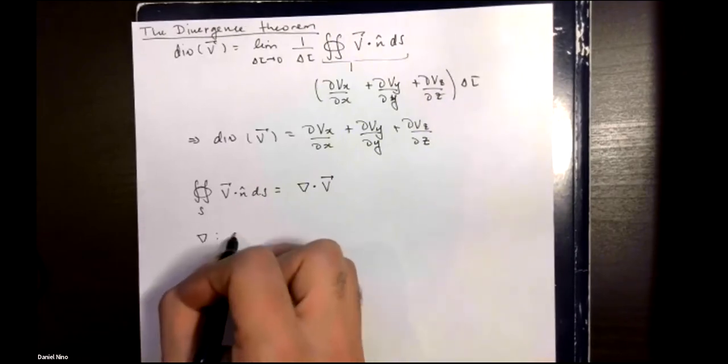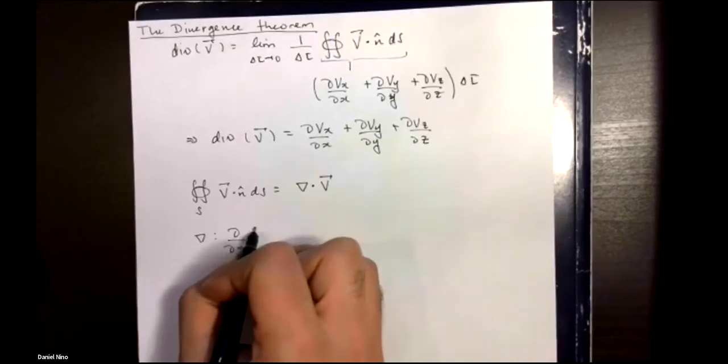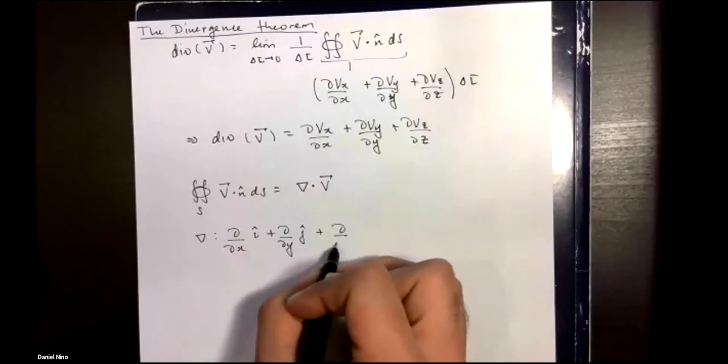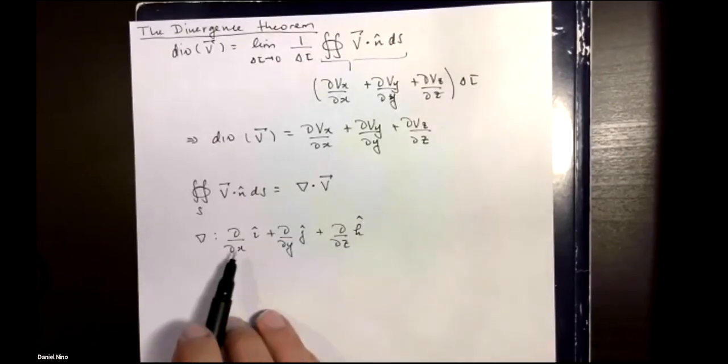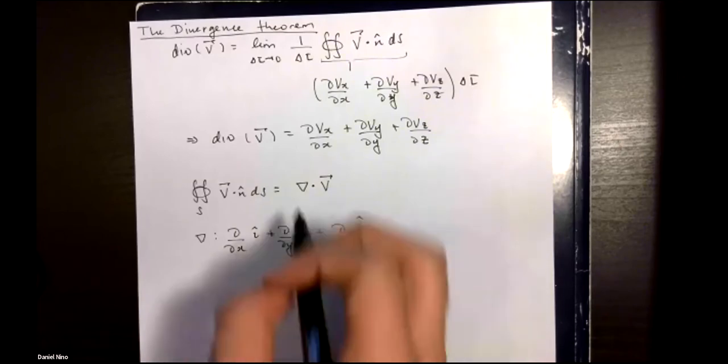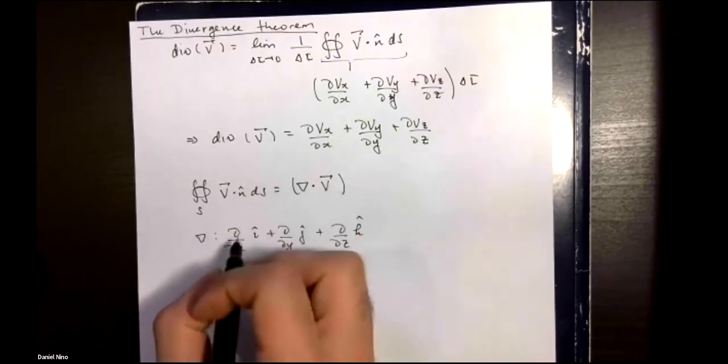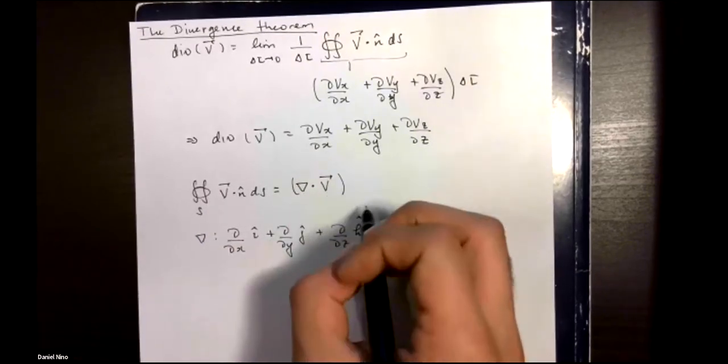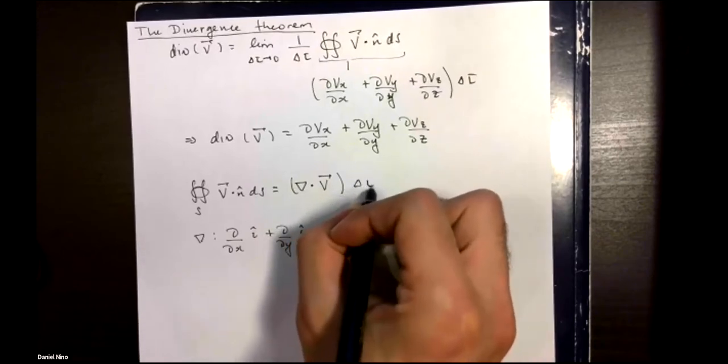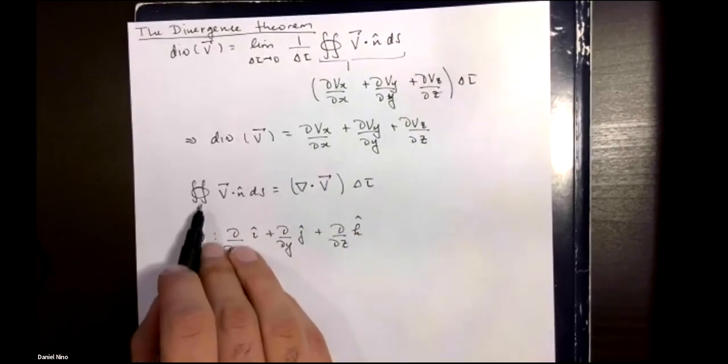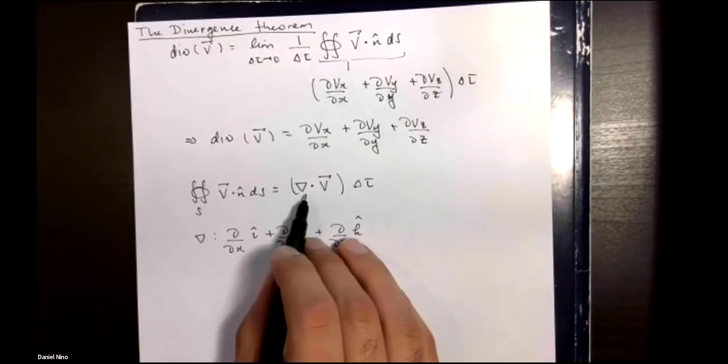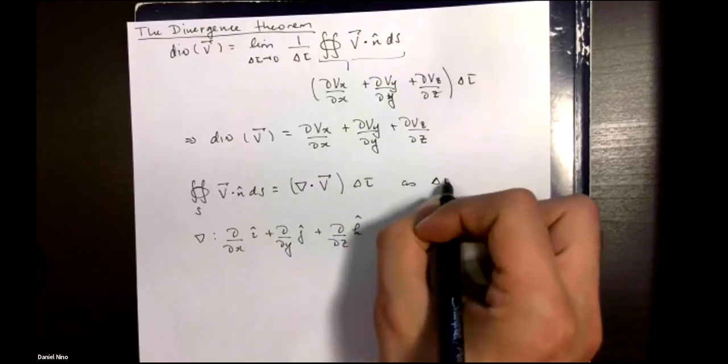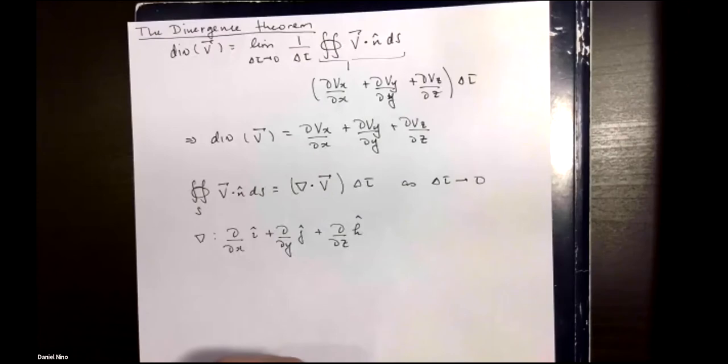Just to refresh your memory, this gradient operator was a vector with partial derivatives as its components. The divergence of v can also be computed as the dot product between the gradient operator and your vector field. In particular, this means that the surface integral over the entire enclosed surface is equal to the divergence times your infinitesimal volume as delta tau goes to zero.